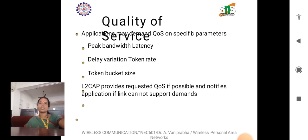QoS parameters in Bluetooth may include latency requirements, packet loss tolerance, and throughput guarantees depending on the application needs. Applications may demand QoS on specific parameters: peak bandwidth, latency, delay variation, token rate, and token bucket size. L2CAP provides the requested quality of service if possible and notifies the application if the link cannot support those demands.